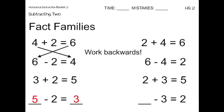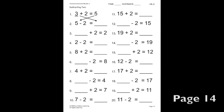Now, we'll go on to the problem next to that. We have the addition problem 2 plus 3 equals 5. And we know that 5 goes into the blank of the subtraction problem, because of working backwards on the addition problem. So, now we'll go on to the next page and work some more with fact families.